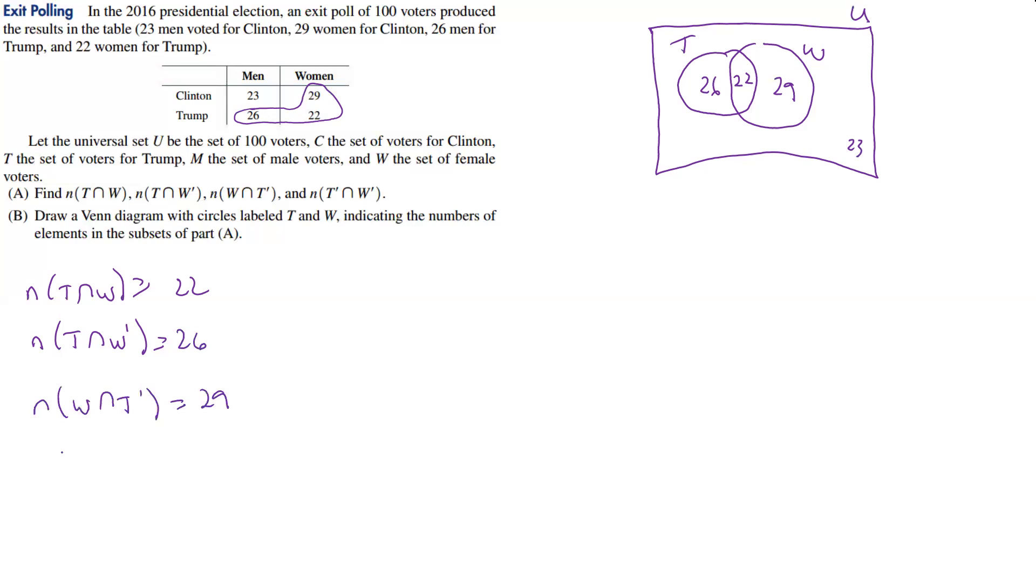And then the last one, T complement intersect W complement. How many are not in T and not in W? That's over here, that's 23. Alright, so let's stop with that one and we'll come back for one last one.